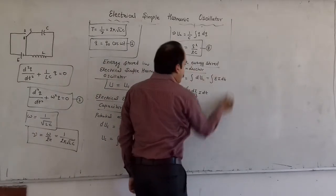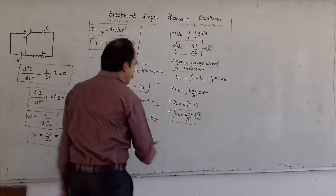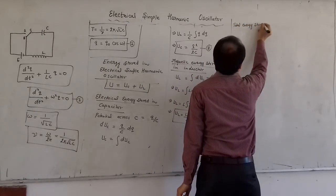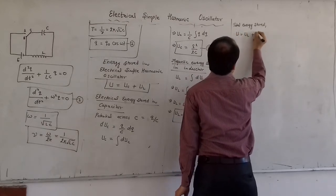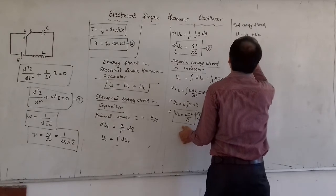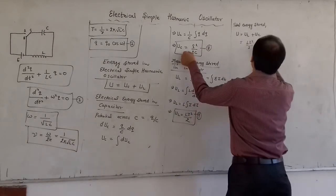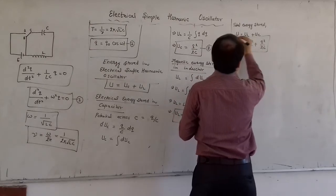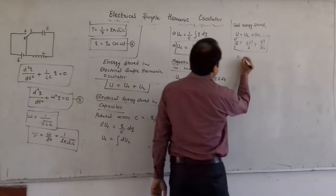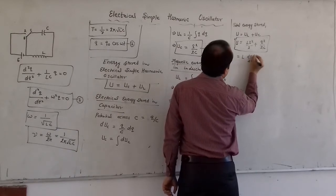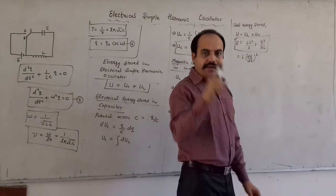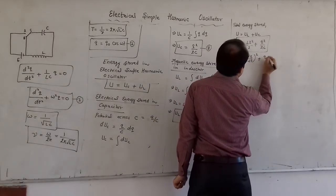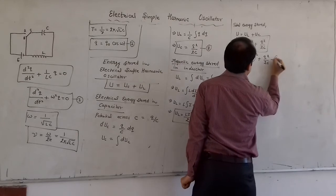Therefore, the total energy stored in the electrical simple harmonic oscillator is U = UL + Uc = LI²/2 + q²/2C. Since I = dQ/dt (taking the negative sign, whose square becomes positive), we can write this as U = (L/2)(dQ/dt)² + Q²/2C. Let this be equation number 9.